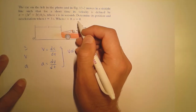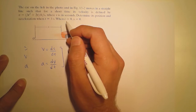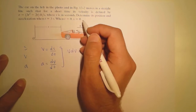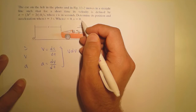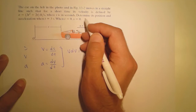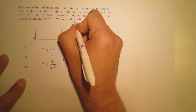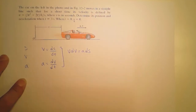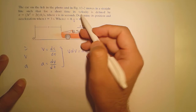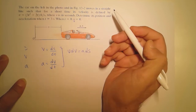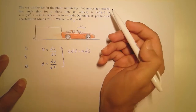We are given the initial position of the car: s equals zero at time t equals zero. Any value associated with the initial time equal to zero is the initial value. So here, the initial position s₀ equals zero.